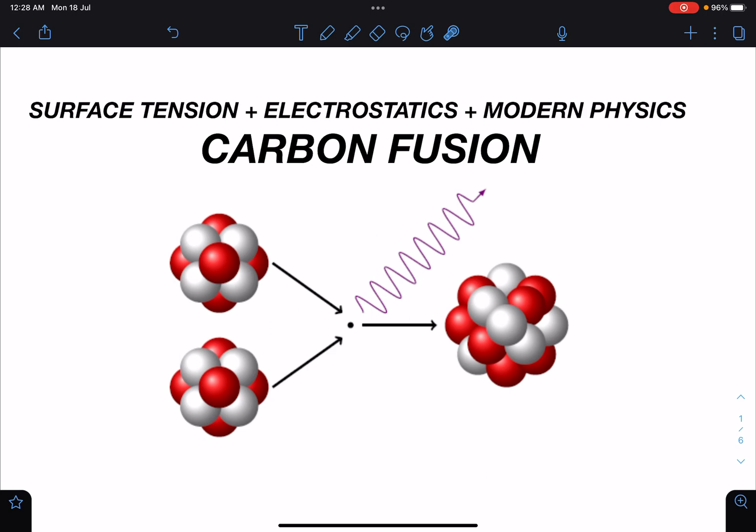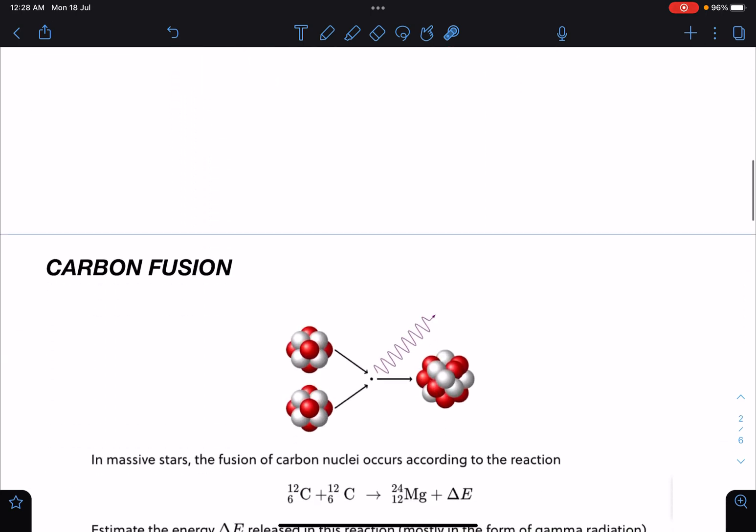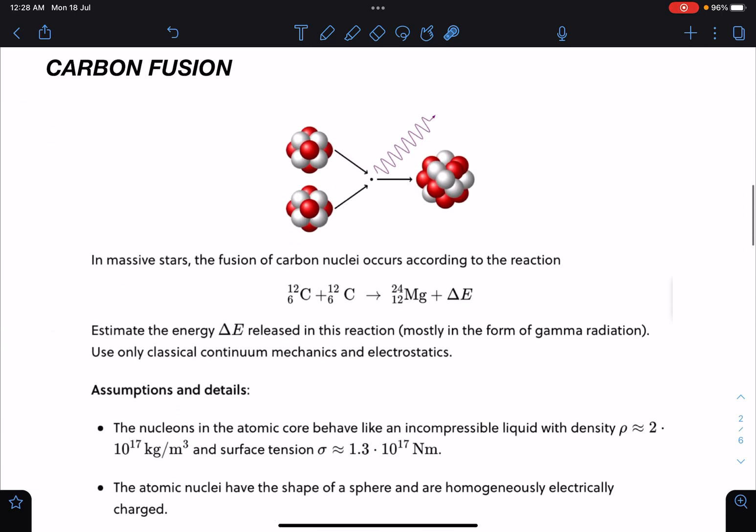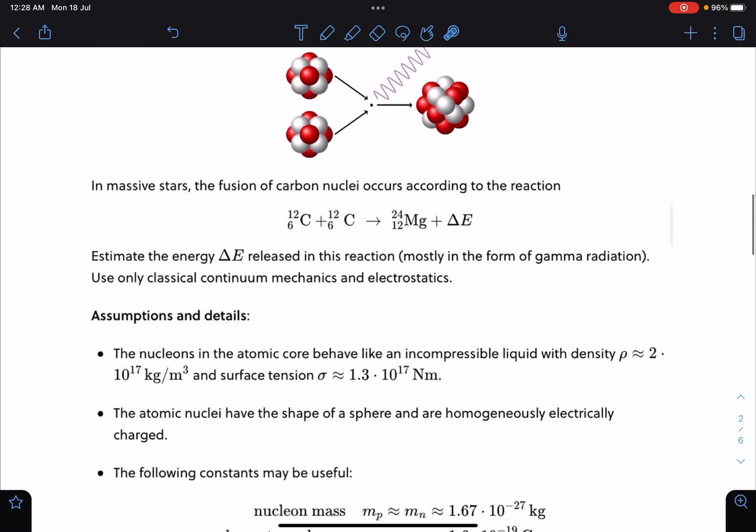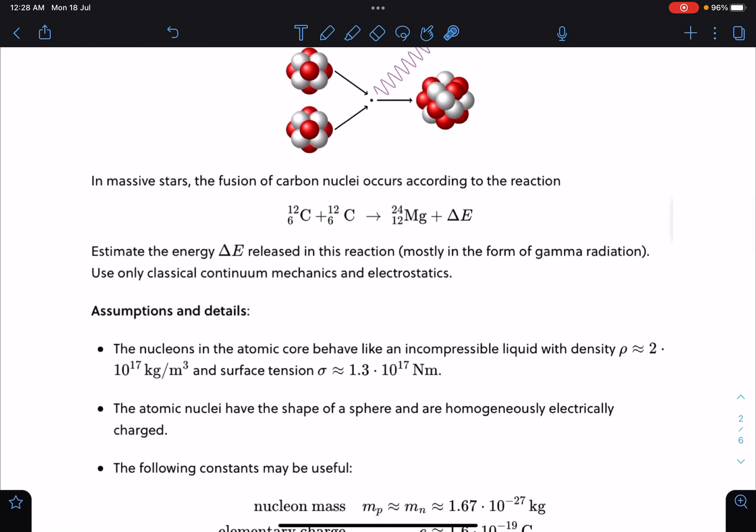Here is the problem statement: In massive stars, the fusion of carbon nuclei occurs according to the relation, so this equation is given. Estimate the energy released in this reaction, mostly in the form of gamma radiation. Use only classical mechanics and electrostatics.